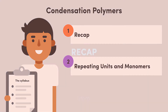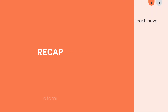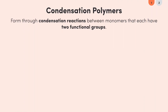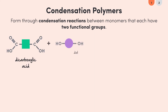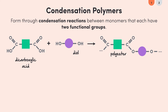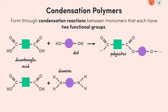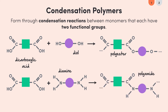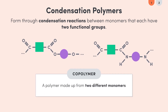Condensation polymers form through condensation reactions between monomers that have two functional groups. For example, we could have a dicarboxylic acid and a diol reacting to form a polyester, or we could have a dicarboxylic acid and a diamine reacting to form a polyamide. In both of these cases, the polymers are made up of two different monomers.